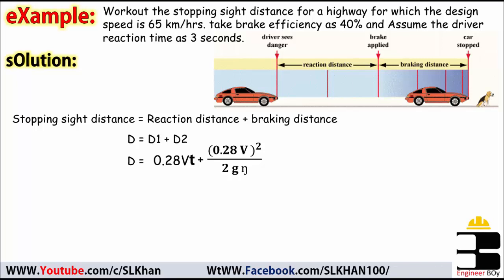So now the only thing we have to do is just plug and chug in these formulas. Like you can say D equals 0.28 times V which is 65 kilometers per hour times t which is 3 seconds, plus 0.28 times V that's again 65 squared, divided by 2 times g which is going to be 9.81 and eta that's given right, so that's the brake efficiency which is 40 percent or you can say 0.40. I'm going to remove just the percent sign over here, so you can divide that by 100 to remove that percentage sign.